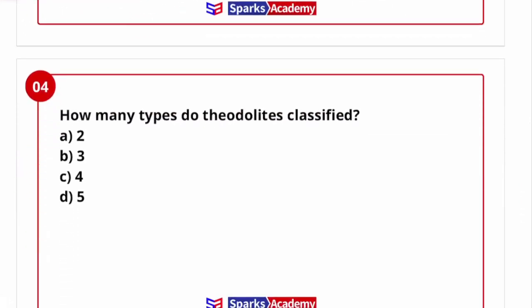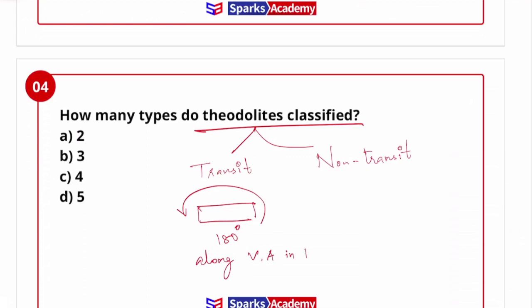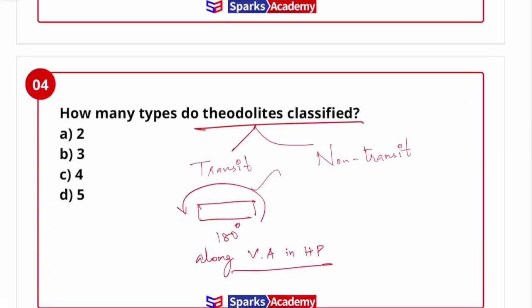Next. How many types do theodolites are classified? Transit theodolite and non-transit theodolite. If we can rotate along 180 degree, we can rotate along the vertical axis in horizontal plane. So vertical axis in horizontal plane, we can rotate along 180 degree, that means transit theodolite. Suppose if I can't rotate that theodolite, it is called non-transit theodolite. Non-transit theodolite, now the usage is very minimal. We can use it. It becomes obsolete. Usually we can use transit theodolite, then digital theodolite. Nowadays for all the projects, engineering works.